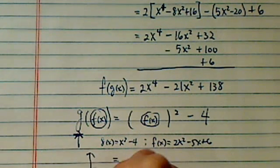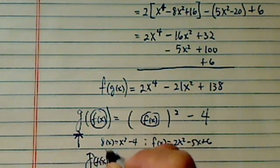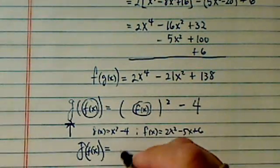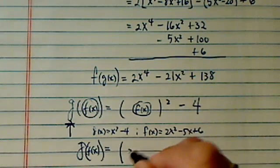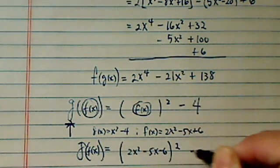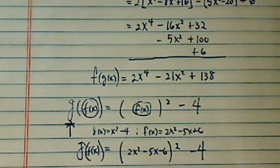So for our case, g(f(x)), if I were to test you or ask you this on a test, this is what you do. You're going to take (2x² - 5x + 6), the whole thing squared, minus 4. Hope this has helped you.